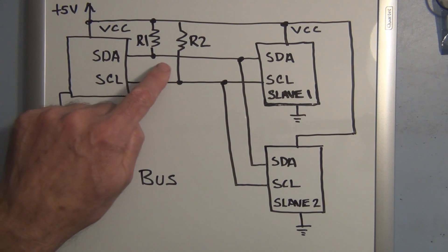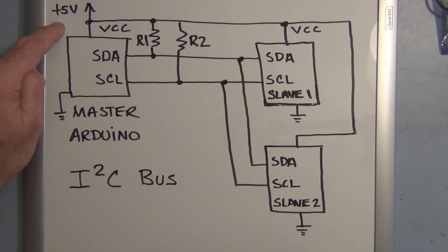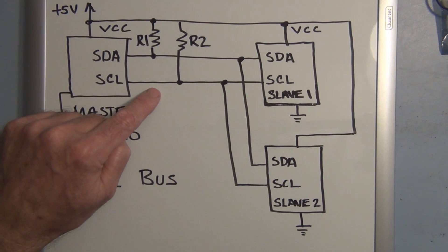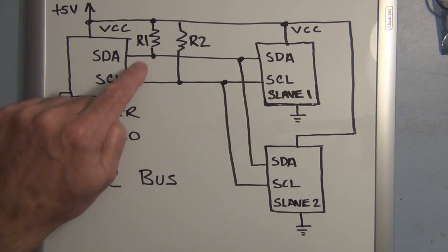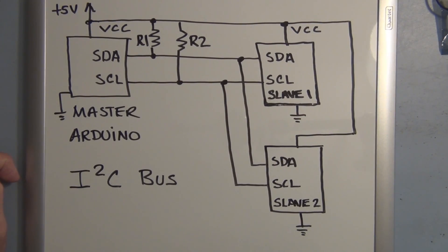It does require these two resistors called pull-up resistors. That's so the serial data and the serial clock are not at just some random arbitrary voltage level. This guarantees that they're going to be pulled up to five volts until they receive a signal. And then we can pull it down to zero volts. But this stabilizes these two communication lines.